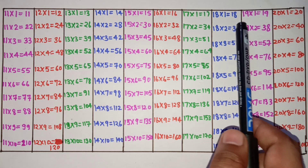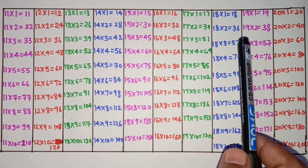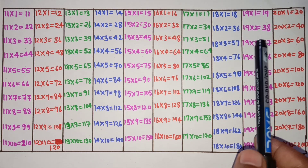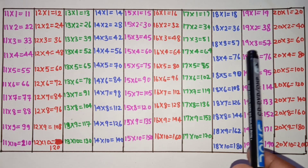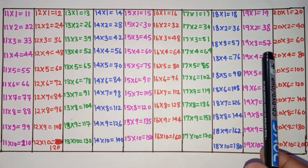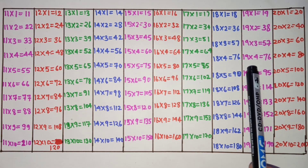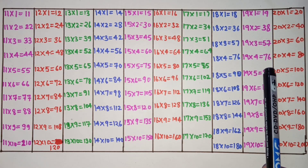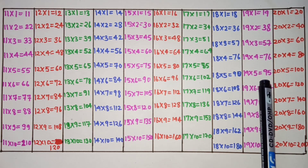19 1s are 19, 19 2s are 38, 19 3s are 57, 19 4s are 76, 19 5s are 95.